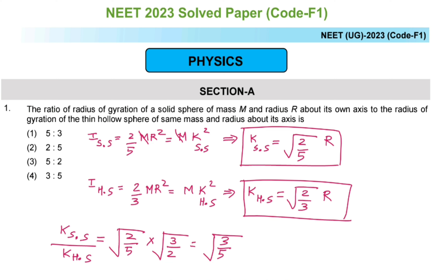Looking at the options, none of them show a square root. So if a square root is added to option 4, the answer would be option 4 — that is √(3/5) or equivalently √3 is to √5. The final answer is option 4. Are you following this? Yes.